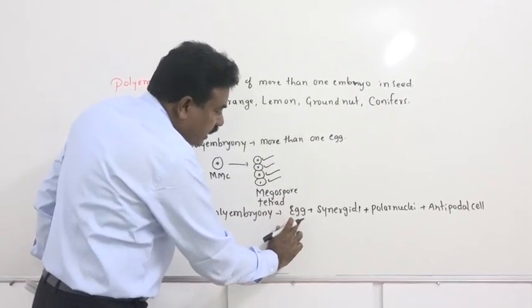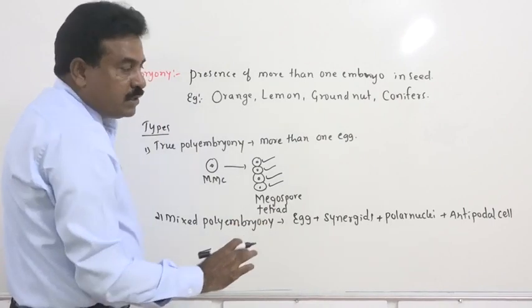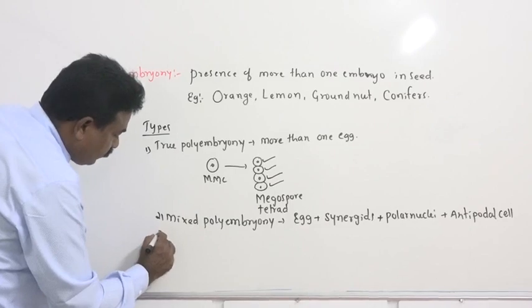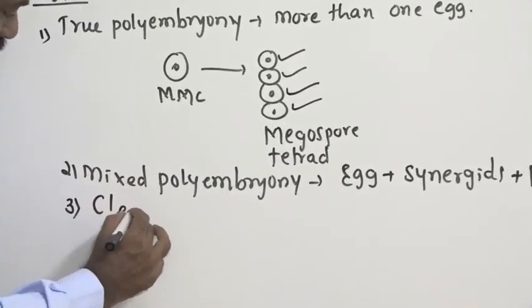Why do you call it mixed? Because, along with egg, synergid cells are mixed, or polar nuclei are mixed, or antipodals are mixed during a fertilization process. Third one, that is cleavage polyembryony.